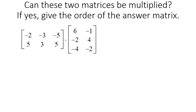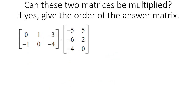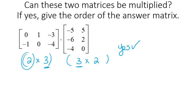Let's look at these two. The first one is 2 rows and 3 columns, the second one is 3 rows and 2 columns. If you look at the inner numbers, are they the same? Yes, so these two can be multiplied, and the answer will be a 2 by 2 matrix. Here's another pair: 2 rows and 3 columns times 3 rows and 2 columns — inner numbers match, so these can be multiplied, and the answer is also a 2 by 2.